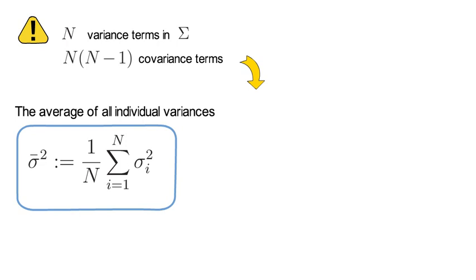We therefore define the average value of all individual variances as sigma upper bar to the power of 2, and we define the average pairwise correlation term as the covariance upper bar, which equals the following expression.